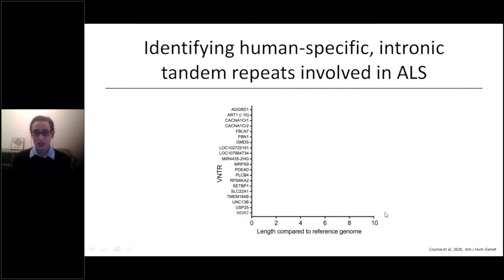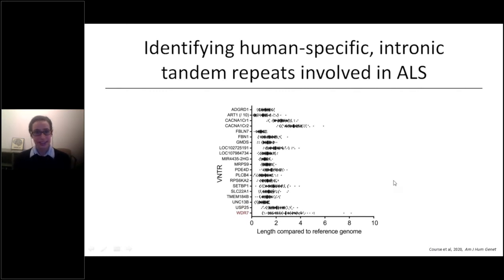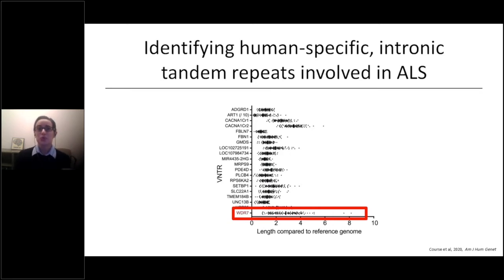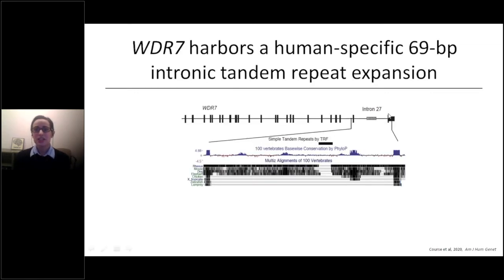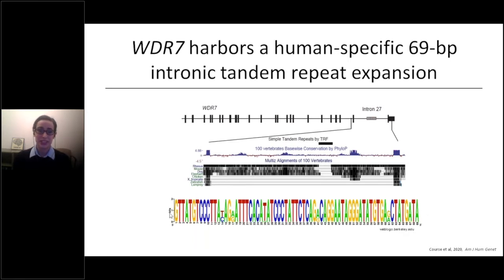Here I'm showing you the lengths of these VNTRs in the Answer ALS dataset. One VNTR in particular was especially variable — variability in size and length was one of the characteristics we were most interested in. This VNTR lives in the final intron of a gene called WDR7, which also encodes a protein involved in synaptic transmission. This repeat is expanded in humans but not in any other vertebrates, and each repeat unit is 69 base pairs long, making it the largest repeat expansion in terms of repeat unit size characterized in this way.